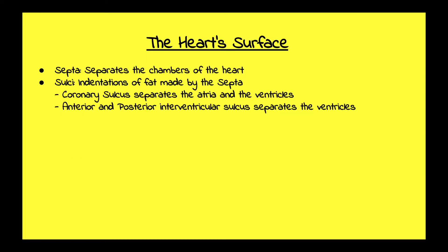The surface of the heart has indentations of fat made by septa, and your septa separates the chambers of your heart. If you look closely, you can see that the coronary sulcus separates the atria and the ventricles, and your anterior and posterior interventricular sulcus separates the ventricles.